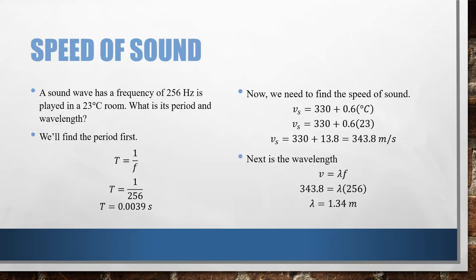Let's look at a problem with one of these. Let's say we've got a sound wave has a frequency of 256 Hz in our 23 degrees Celsius room, and I want to find its period and wavelength. Well, first of all, since I know the frequency, I want to find the period first because, remember, period and frequency are inverses of each other. So, if you know one, you take the inverse, you've got the other one. So, if I take the inverse of 256, in other words, one divided by 256, I get the period of 0.0039 seconds.